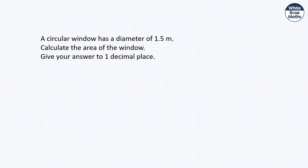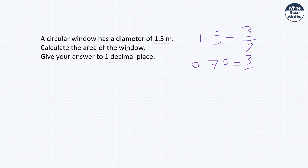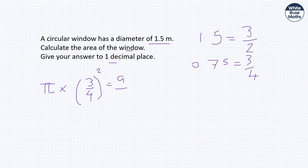A circular window with diameter 1.5 metres — calculate the area to 1 d.p. The radius is 0.75 (i.e. ¾). Area = π × (¾)² = π × 9/16 = 9π/16 ≈ 1.8 metres squared to 1 d.p.